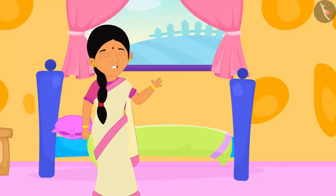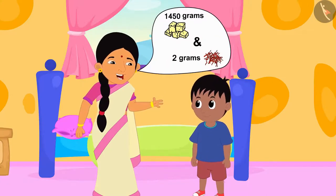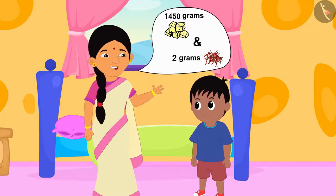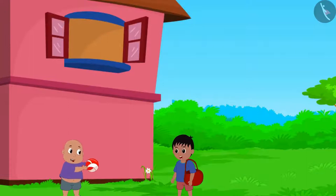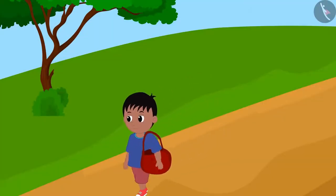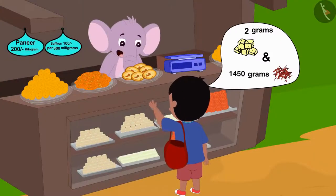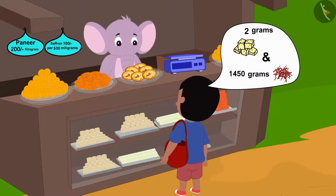Raju's mother asked him to buy 1450 grams of paneer and 2 grams of saffron from Appu's shop. Raju kept playing on the way and finally reached Appu's shop. I want 2 grams of paneer and 1450 grams of saffron, Raju told Appu.